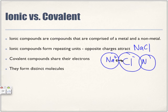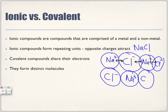In sodium chloride, there can be millions of atoms bonded together to represent it, because of the attraction of opposite charges. There is an attraction within the positives and negatives of ionic compounds. Covalent compounds, on the other hand, share their electrons and form distinct molecules.